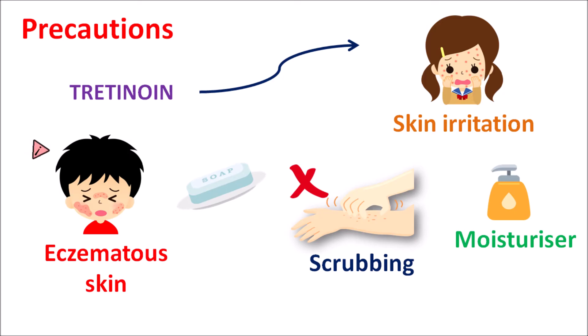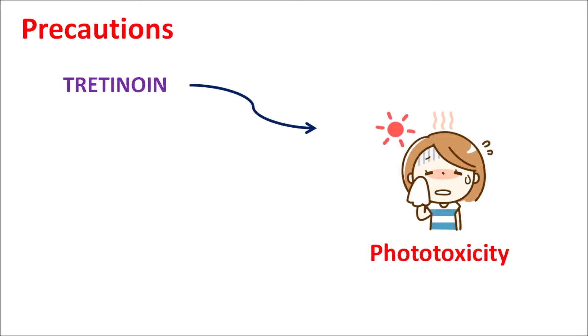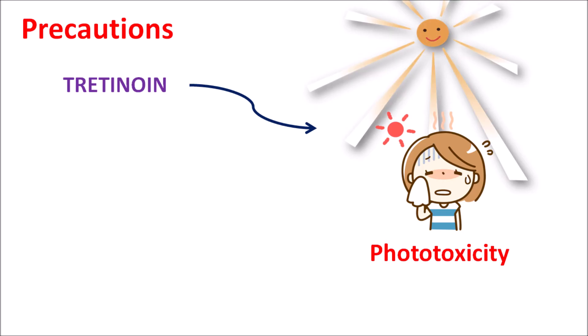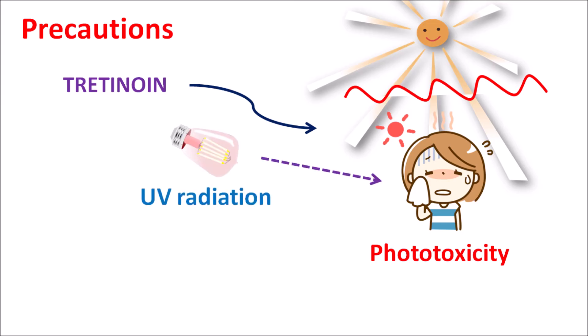Even with all precautions, if anyone gets severe skin irritation with use of Tretinoin, it should be discarded as it may increase hypersensitive reactions. A second important precaution is that Tretinoin may increase the risk of phototoxicity. When applied on the skin, it can increase the sensitivity of the skin and change the pigmentation pattern. Those applying Tretinoin topically who are directly exposed to sunlight may experience increased phototoxicity, so direct exposure to sunlight should be avoided. Similarly, exposure to UV radiation can also increase phototoxicity, so caution should be taken and any exposure to direct sunlight and UV radiation should be avoided.